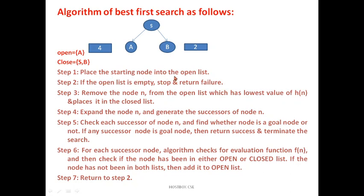Place the starting node - that is the open node. If you want to start, you can start with the initial node S. Then if the open list is empty, stop and return failure. Step 3: Remove the node N from the open list which has the lowest value of h(n) and place it in the closed list.